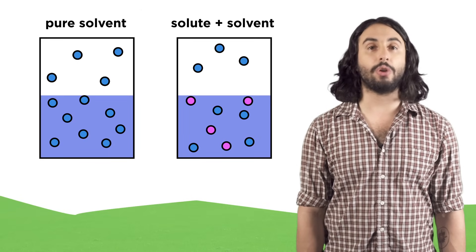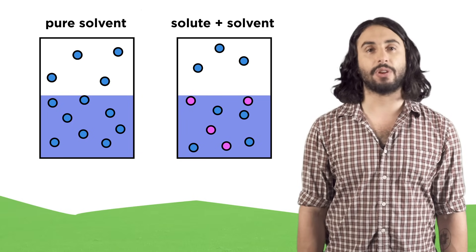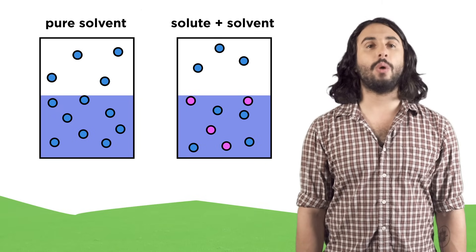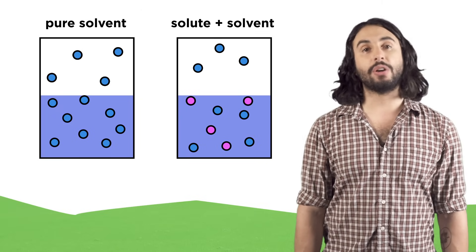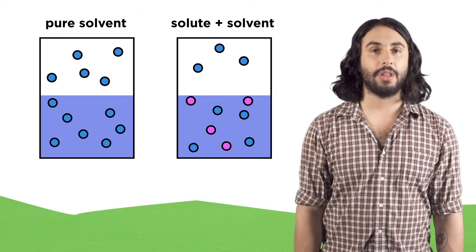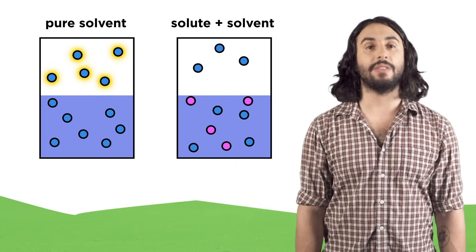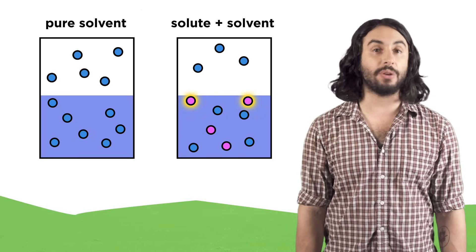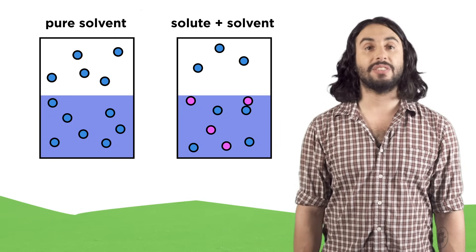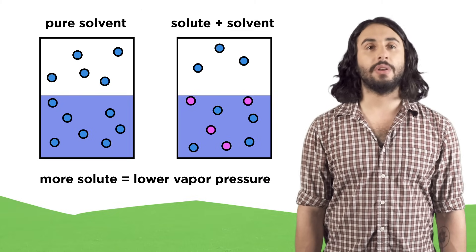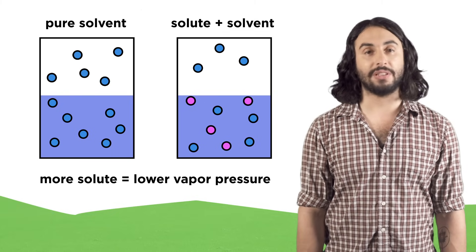When we look at colligative properties, the key theme is that the presence of solute particles interferes with the activity of solvent particles at the interface between two phases. A liquid will always have a particular vapor pressure since particles at the surface of the liquid can spontaneously enter the gas phase — the number of gaseous particles determines the vapor pressure. But solute particles sitting at the interface occupy some of the surface area, which hinders some solvent molecules from evaporating. Therefore, the presence of the solute causes the vapor pressure of the liquid to decrease.